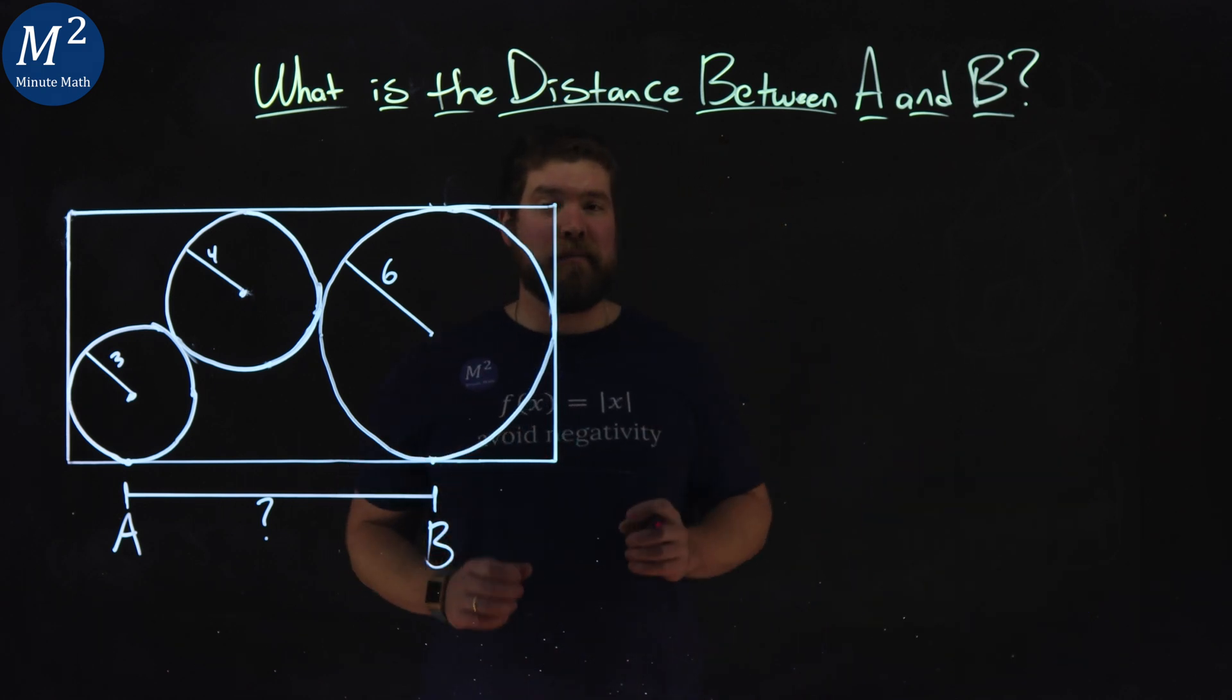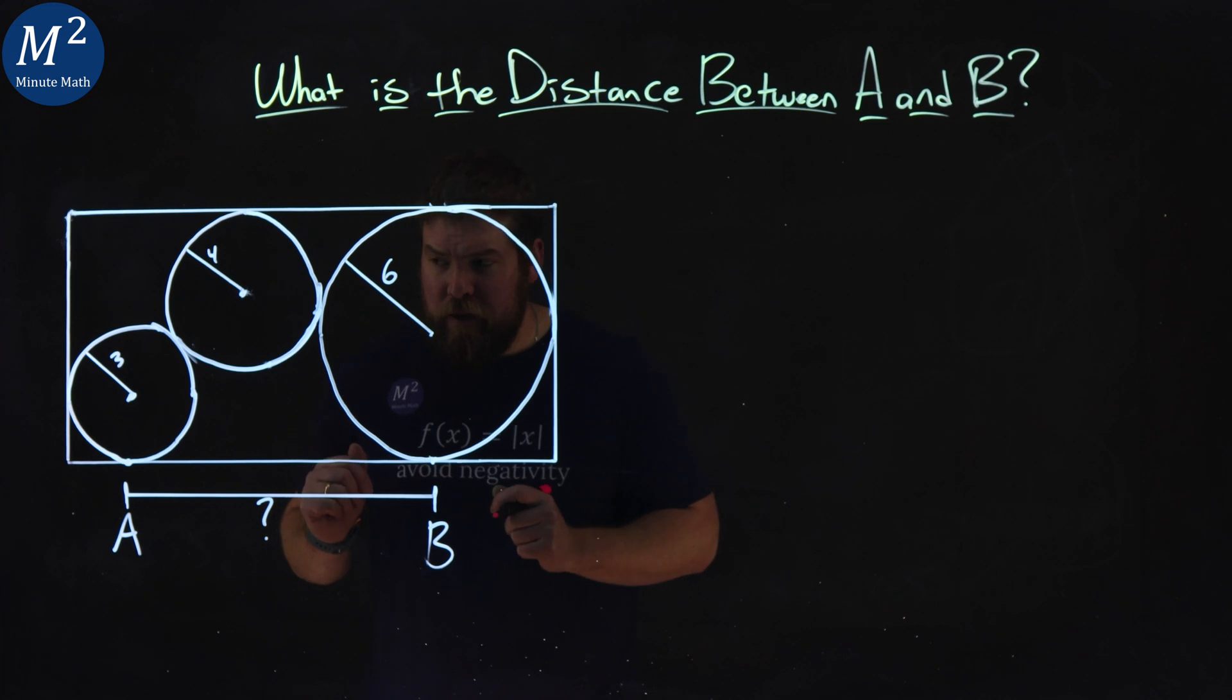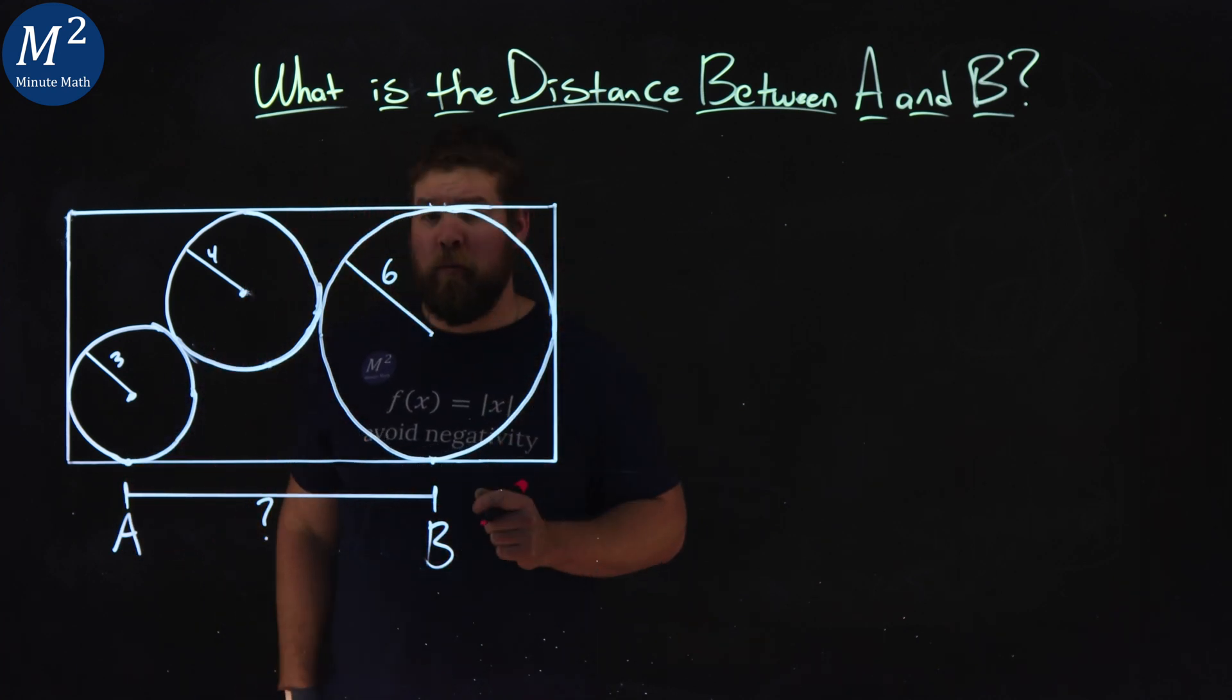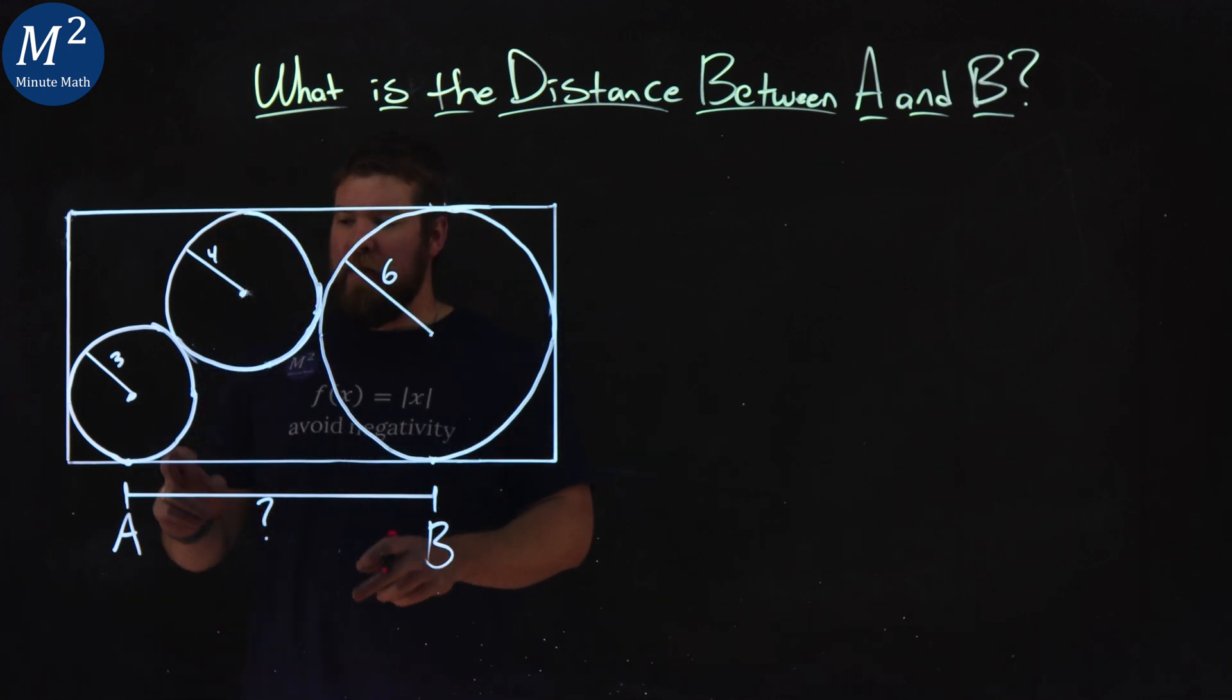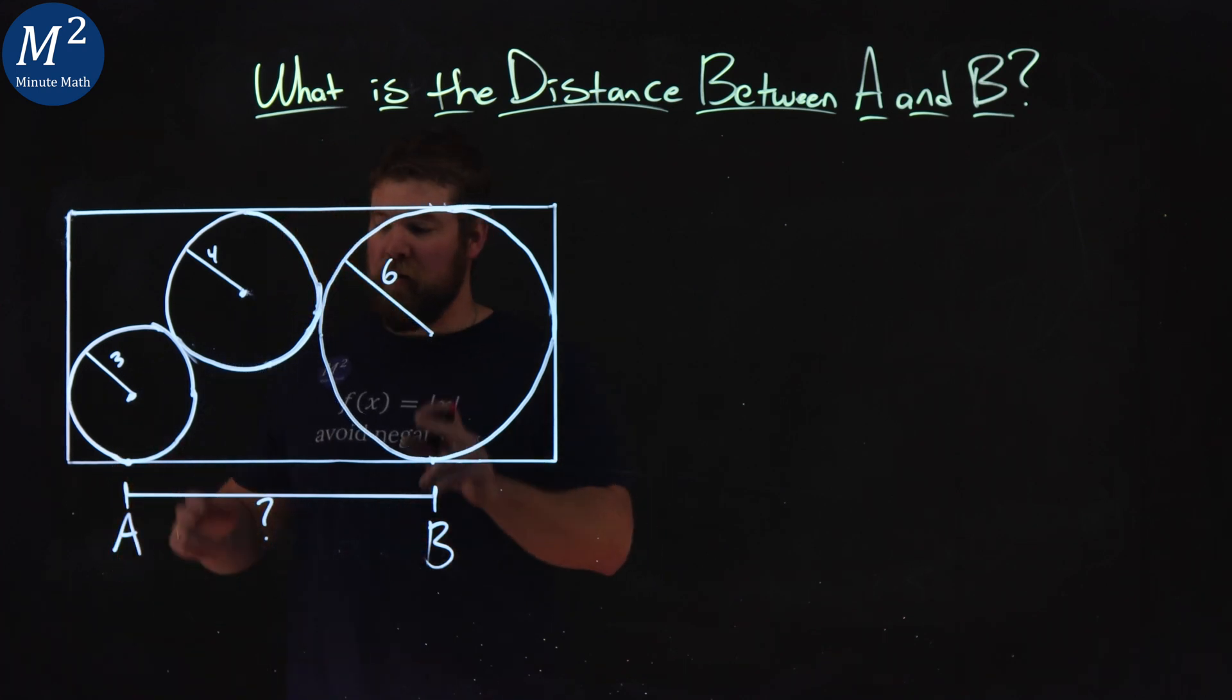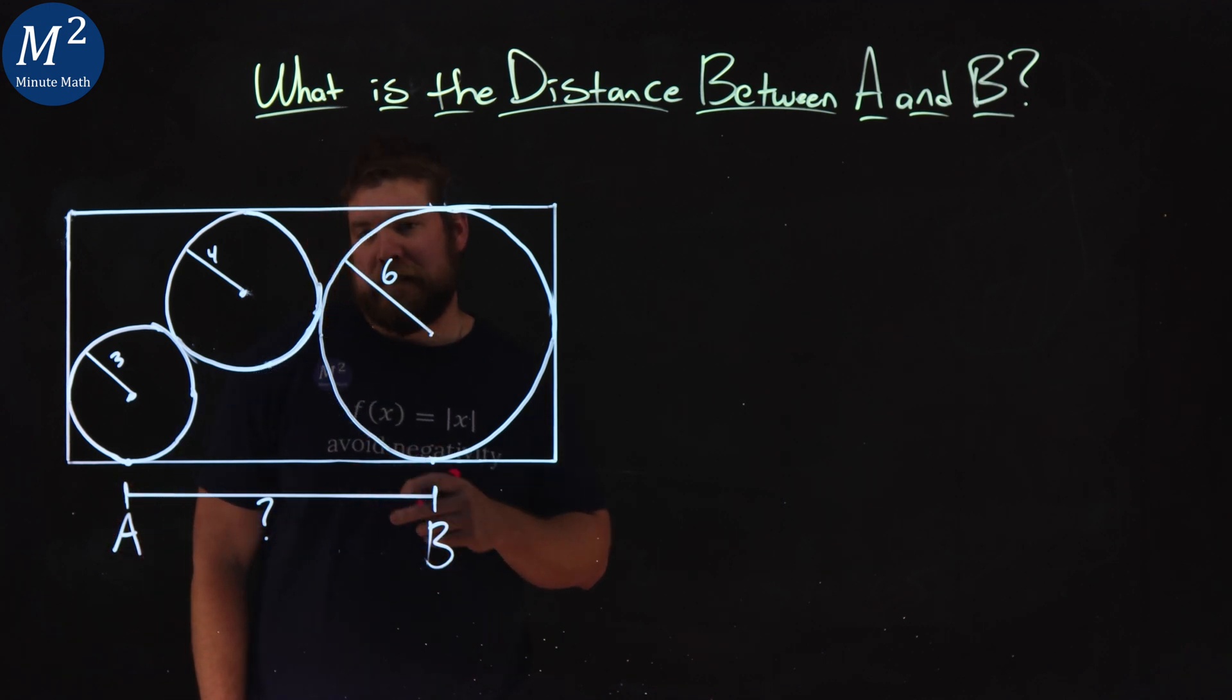We want to find the distance between points A and B. Let's look at our image here first. We have three circles inscribed in a rectangle. One circle has a radius of 6, the other has 4, the other one is 3. The centers of the radius 3 circle and the radius 6 circle line up with A and B, and we want to figure out what that distance is.